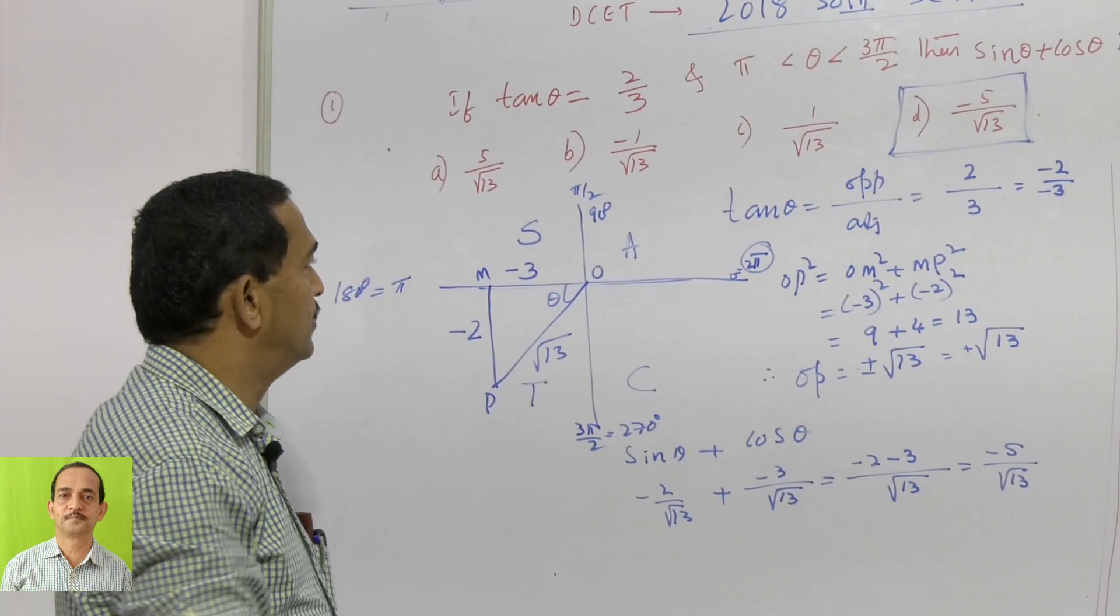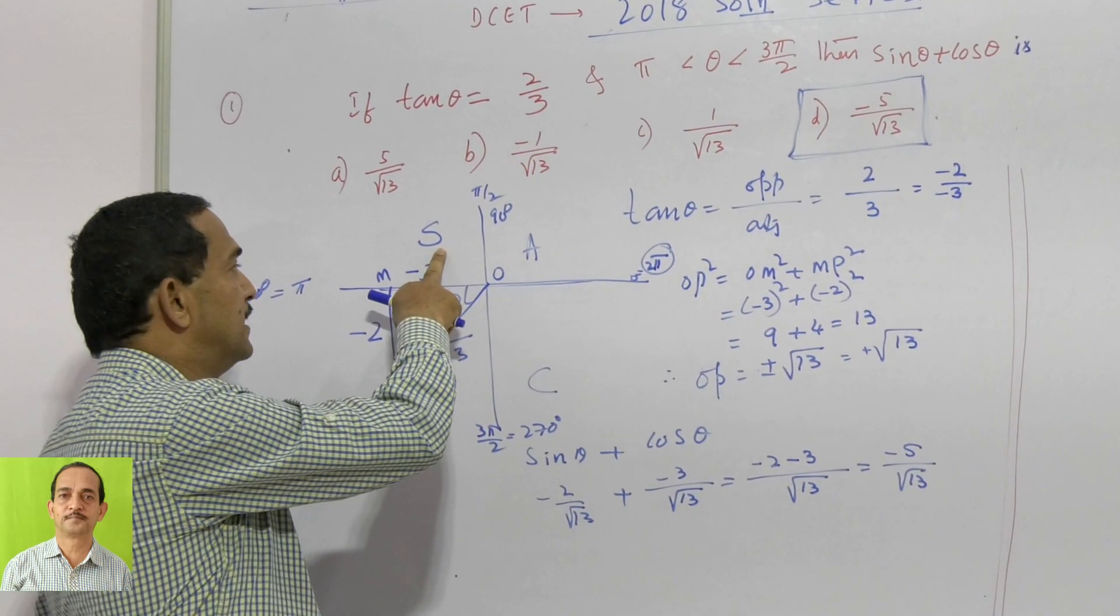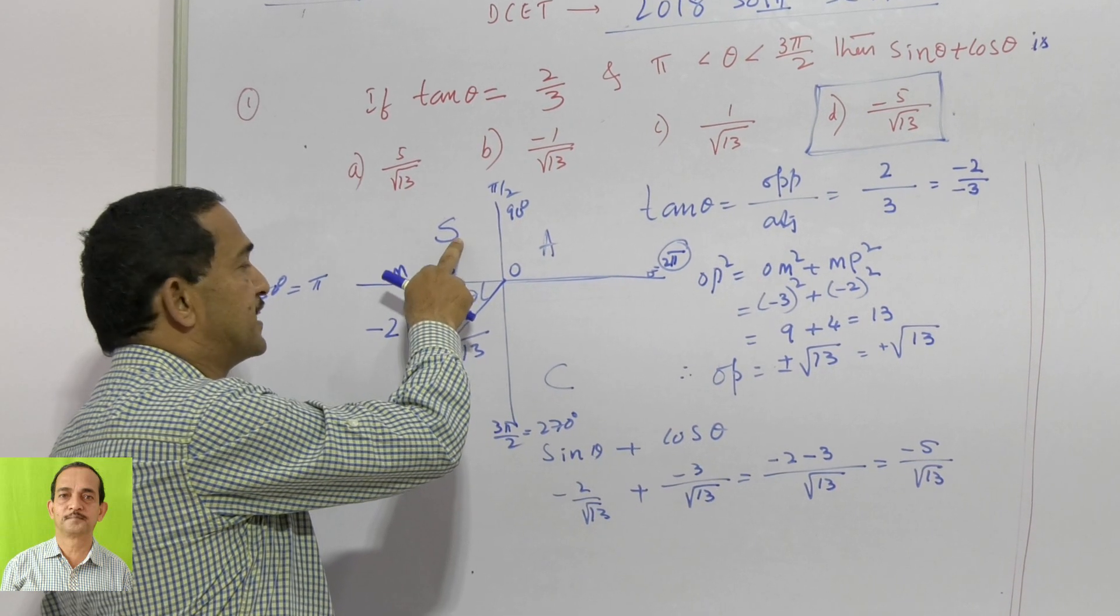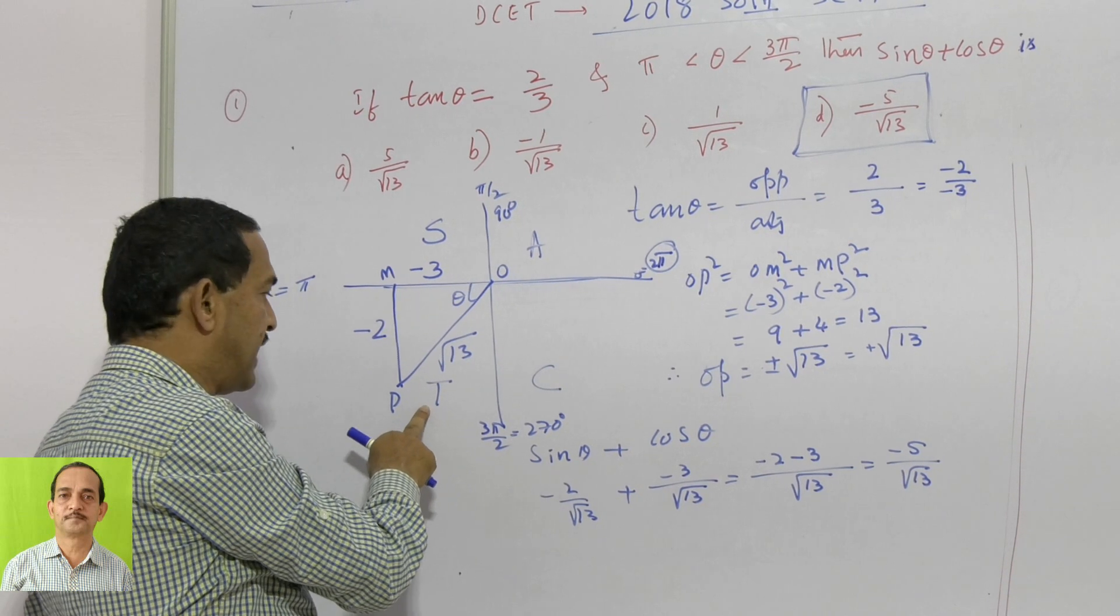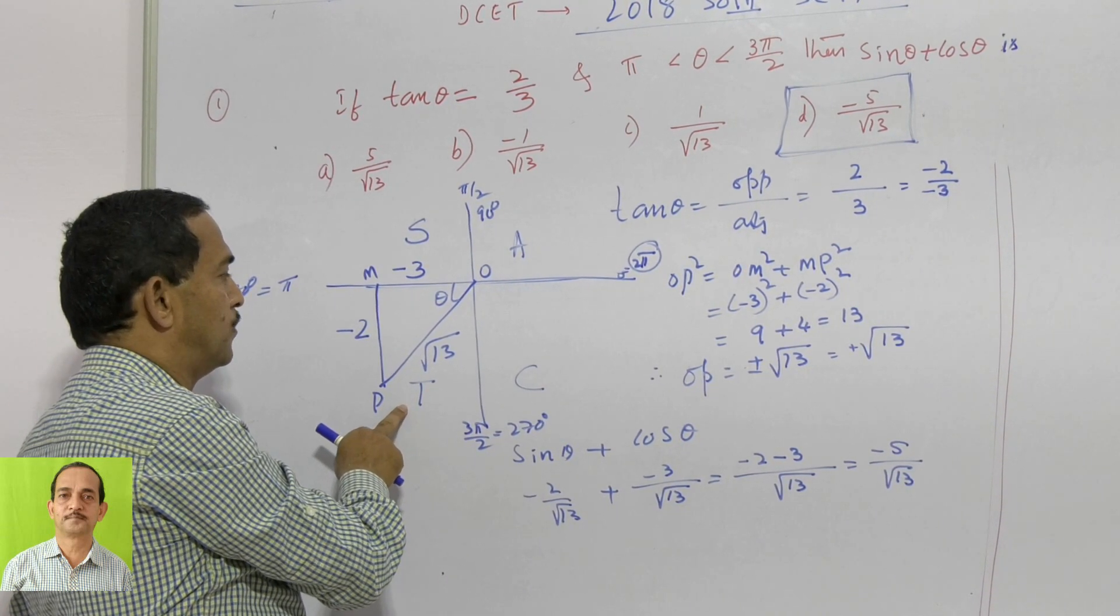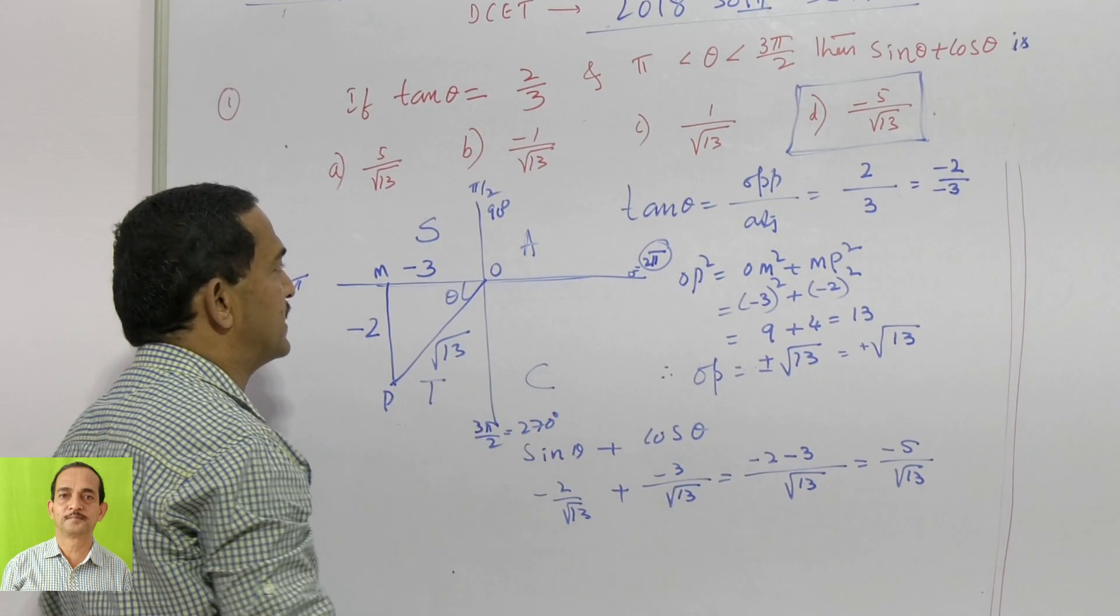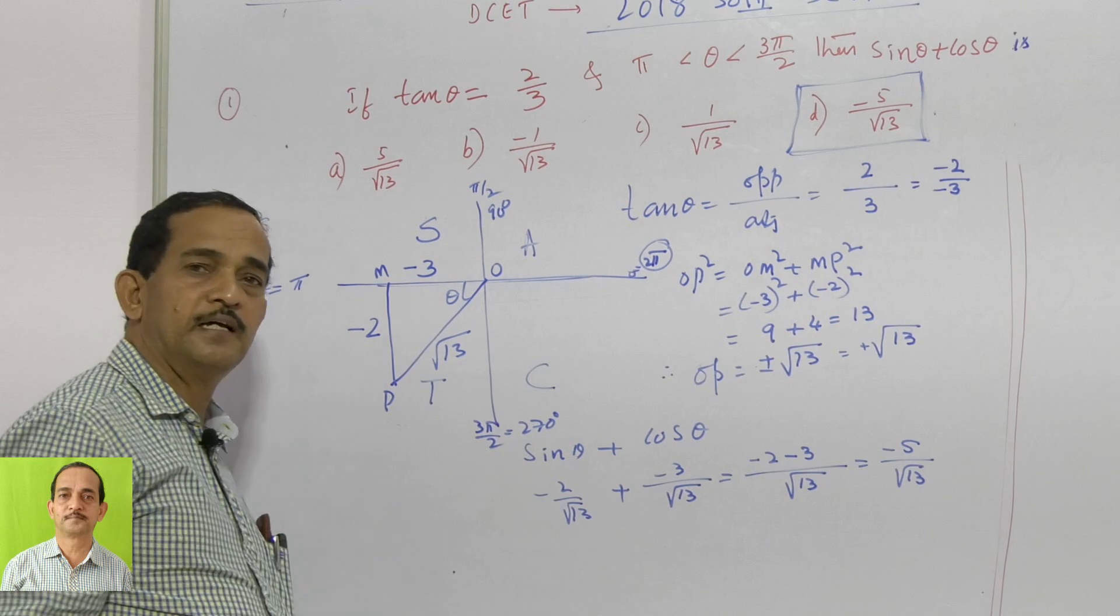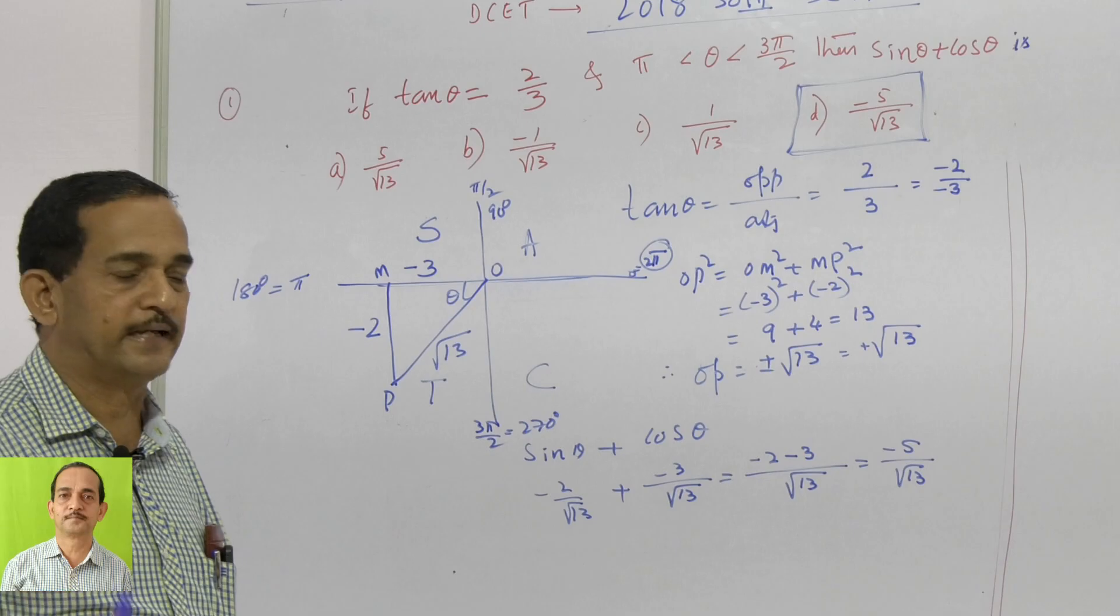ASTC rule means all the trigonometric functions are positive in the first quadrant. In the second quadrant, sine and cosecant are positive. In the third quadrant, tan and cot are positive, remaining are negative. And in the fourth quadrant, cos and secant are positive, the remaining are negative. This is about the first question we are supposed to take.